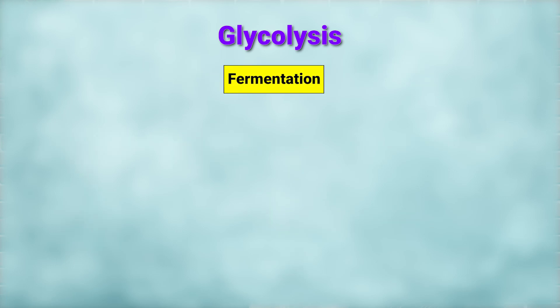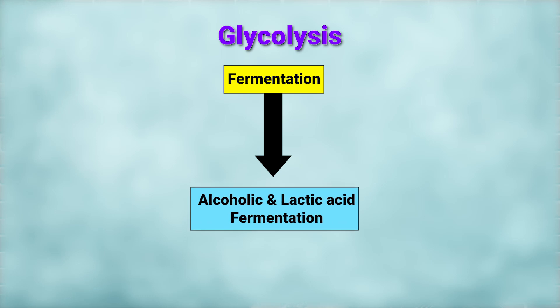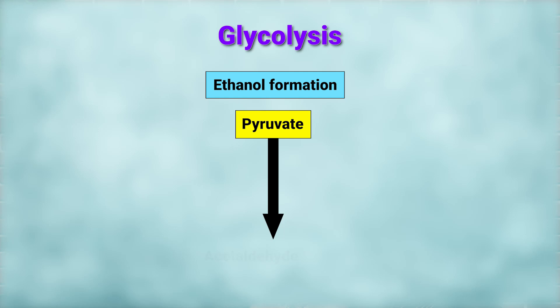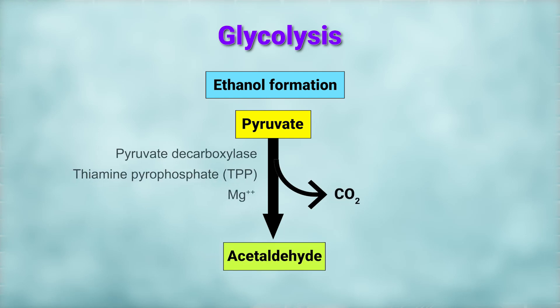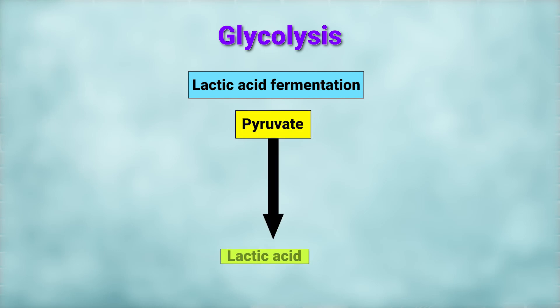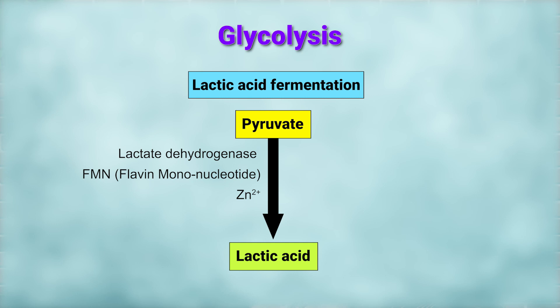The term fermentation is used after the name of the products, like alcoholic fermentation and lactic acid fermentation. During ethanol formation — that is, in alcoholic fermentation — pyruvate is first converted to acetaldehyde and carbon dioxide in the presence of TPP and magnesium and the enzyme pyruvate decarboxylase. After that, it is converted to ethanol in the presence of the enzyme alcohol dehydrogenase, and it occurs in bacteria and in yeast.